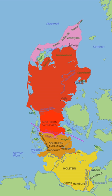Jutland has historically been one of the three lands of Denmark, the other two being Scania and Zeeland. Before that, according to Ptolemy, Jutland or the Cimbric Chersonese was the home of Teutons, Cimbrae and Charudes.